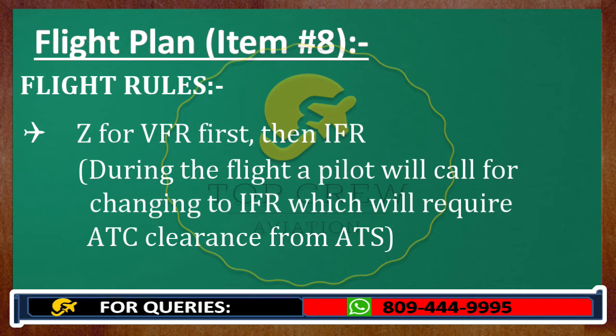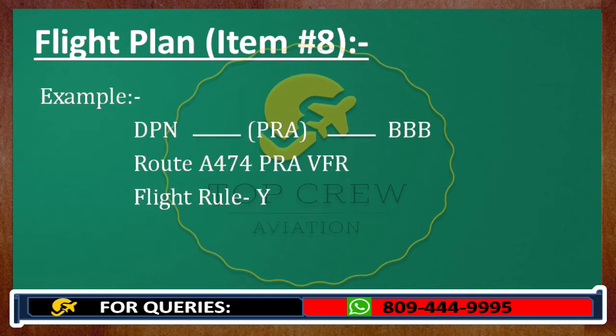Let's understand it with an example to make it more clear. Let's say we are flying from Delhi Papa November to Bravo Bravo Bravo, and the route is Alpha 474, Pratapgarh, VFR. This is how you would get it in your exams, and flight rules are given Yankee.